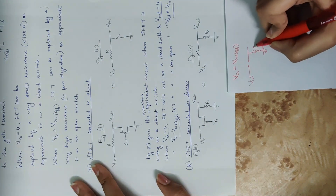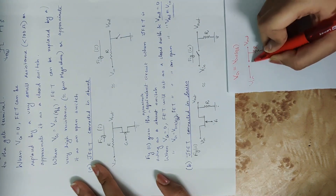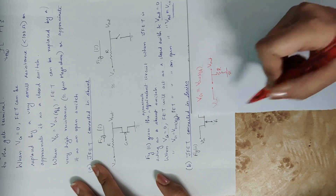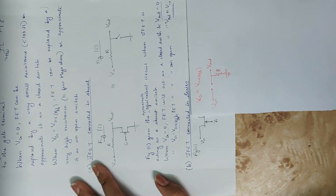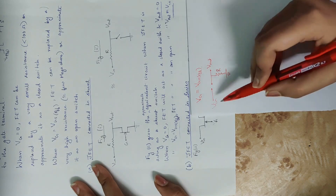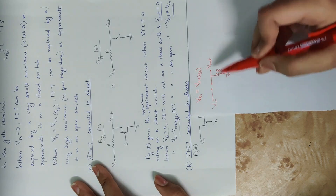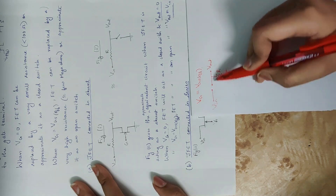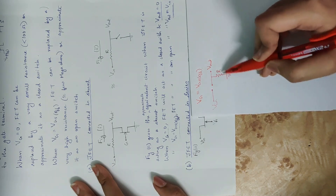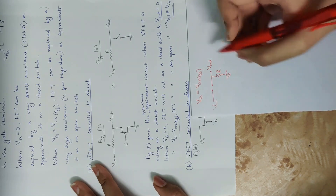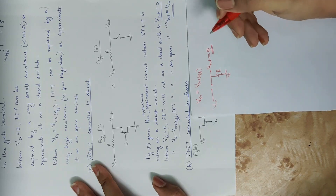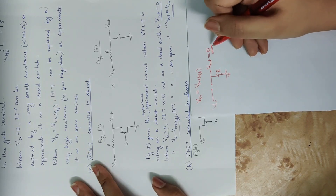The switch is open. Now the input voltage will not appear at the output. No current will flow, so Vout equals 0.